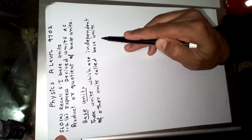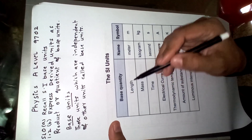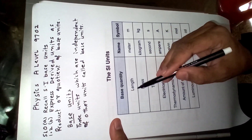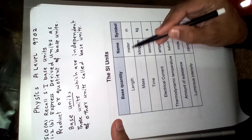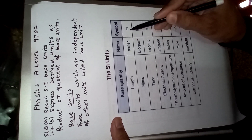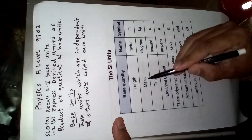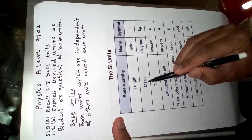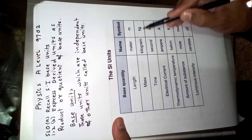In the SI system — International System of Units — there are seven base units. The seven base quantities are: length, with base unit name meter and symbol m; and mass, with base unit kilogram and symbol kg.